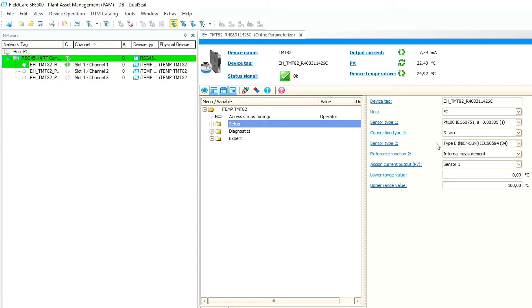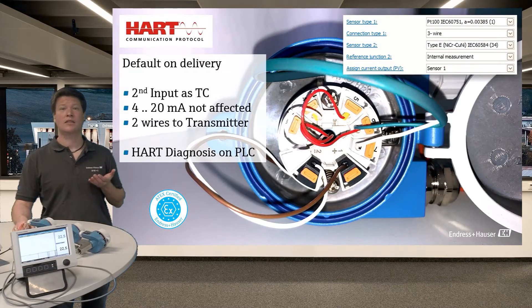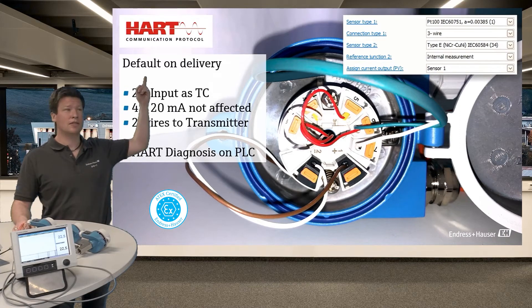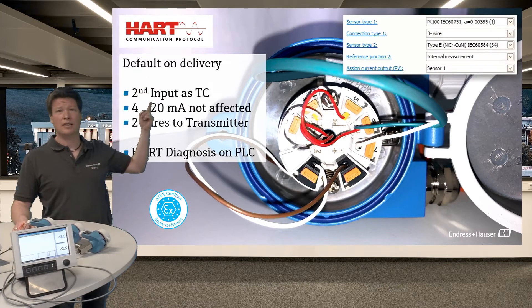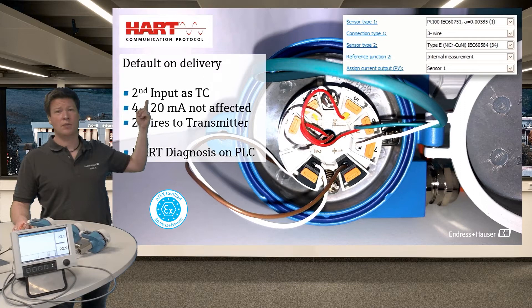Why do we use a thermocouple? Because the thermocouple has a valid signal as long as the switch is closed. And when I open that switch we get an error signal. So the warning on the HART signal is our default delivery status. Second input is configured as a thermocouple.